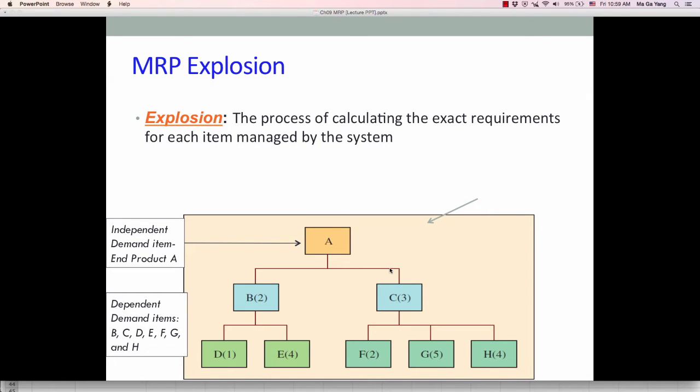But here, a system calculates the dependent demand by examining the end item product structure tree one level at a time. As you know, this is level 0, level 1, level 2. So we have to calculate one level at a time.